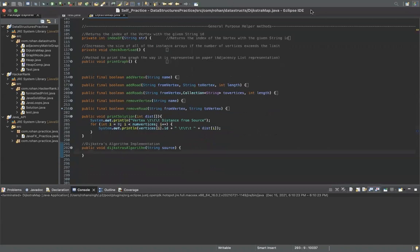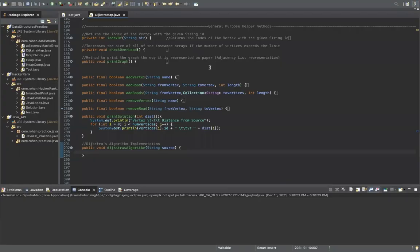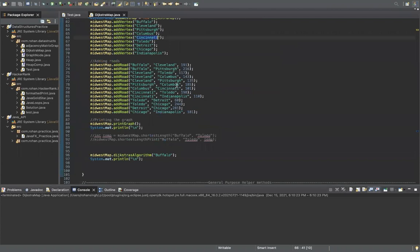Before we start with Dijkstra's algorithm, I wanted to show you what graph we're actually going to be using. This is how the map will look — this is the graphical representation. These are the vertices, which are the cities of Buffalo, Pittsburgh, Cleveland, Columbus, etc. The roads are basically just the edges of the graph. In the main method, I added all these cities and their corresponding edges with their road weights.